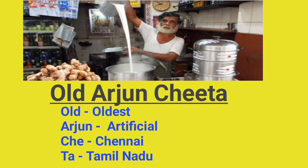Next, remember: 'Old Arjun Cheta.' In Malayalam, elder males are called Cheta. Old means Oldest. A, R stands for Artificial. Cheta — C, H, E stands for Chennai, and T, A stands for Tamil Nadu. So Chennai in Tamil Nadu is the oldest artificial port.